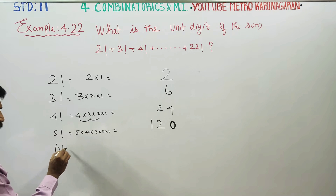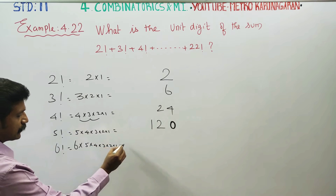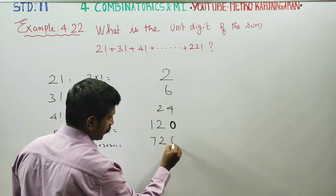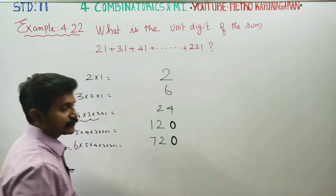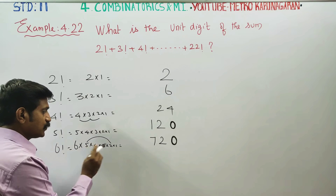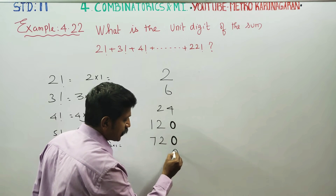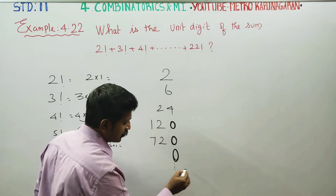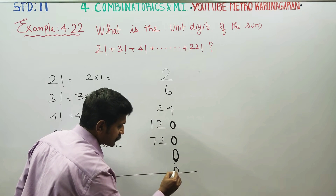Again, for 6 factorial: 6 into 5 into 4 into 3 into 2 into 1, your answer will be 720. Again, it ends with 0. From 5 factorial all the way to 22 factorial, your number will end in 0 only.